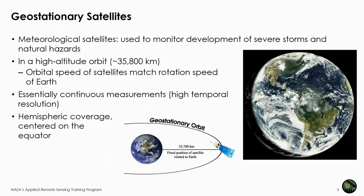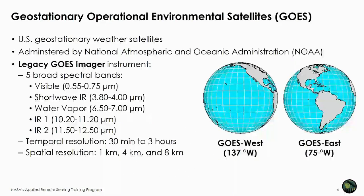Anytime there's a large environmental or atmospheric event like a large wildfire or dust storm, satellite imagery is extremely useful for media as well as outreach from local, regional, and national governments. These are geostationary satellites — because they're in a high altitude orbit, the orbital speed of the satellite matches the rotational speed of the Earth, which means there are essentially continuous measurements of the same location on Earth. These satellites give hemispheric coverage centered on the equator, as shown in this example from GOES-16.